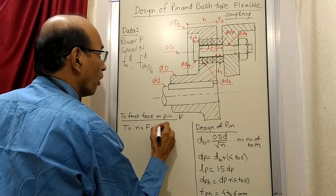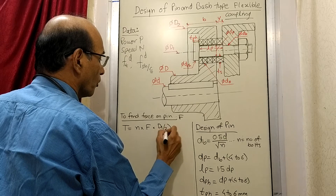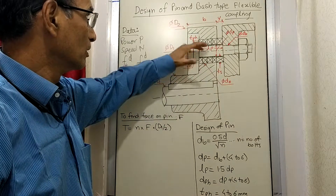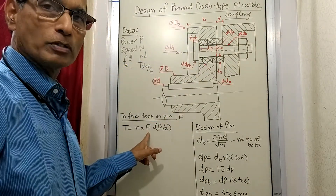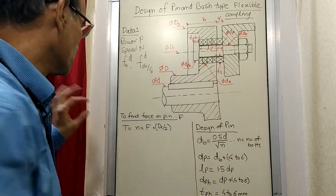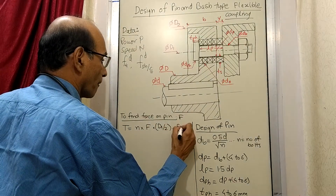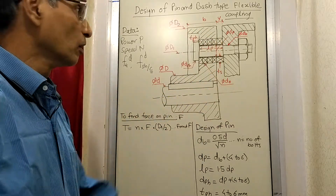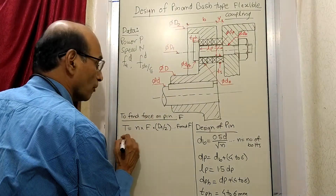This is going to be D1 by 2. D1 is the pitch circle diameter and radius is half of that, so at this distance the force is acting. Per bolt into number of bolts causes the total torque. Since you know the torque and everything else, you can find out how much force is acting at this place. Now this force is going to cause a bending moment, so this is the design of pin.